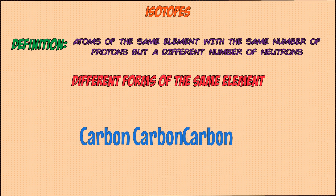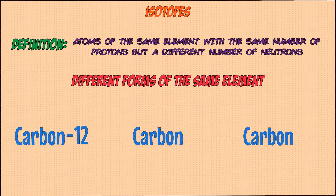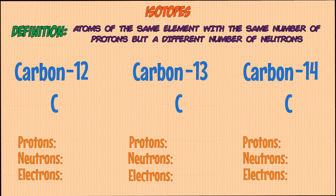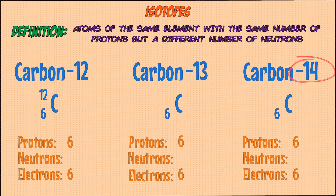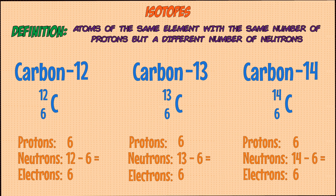Every element has isotopes of itself — you can think of them as different forms of the same element. For example, carbon can have three isotopes known as carbon-12, carbon-13, and carbon-14. All three are the same element carbon, so they have the same number of protons, or atomic number of 6. As they are all neutral atoms, they also have the same number of electrons. The mass numbers are 12, 13, and 14, so we find the number of neutrons by subtracting the atomic number from the mass number, giving us 6, 7, and 8 neutrons respectively.